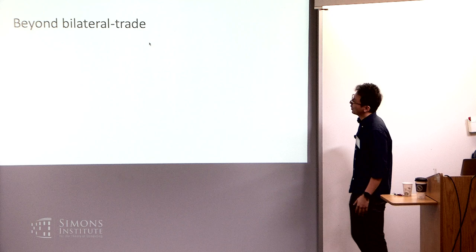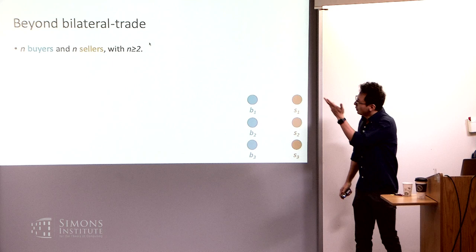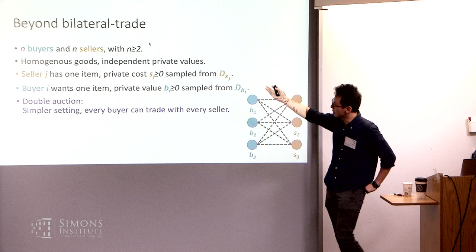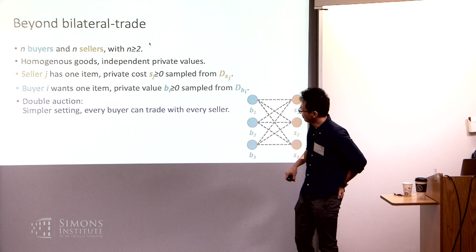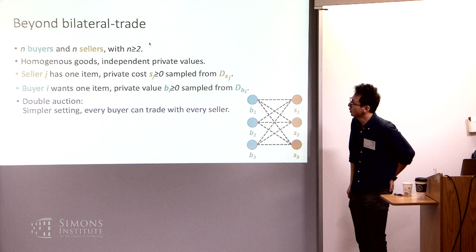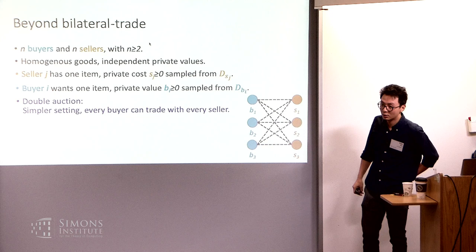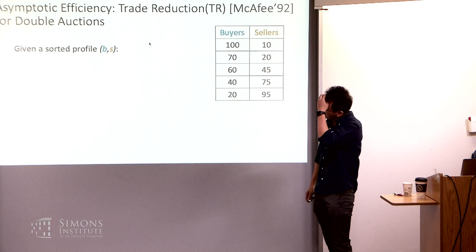Next I want to introduce mechanisms with different types of guarantees. Since I'll be talking about mechanisms using a large market assumption, I can't just look at bilateral trade with only two agents — you need a setting where the size of the problem can grow. So I'm considering the double auction: N buyers and N sellers, each seller has one item, the goods are all homogeneous, each seller has a private cost drawn independently from its own distribution, every buyer has a private value, and every buyer can trade with every seller.